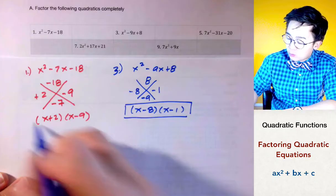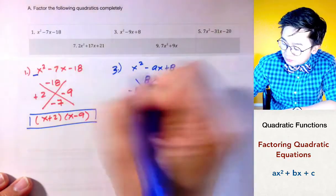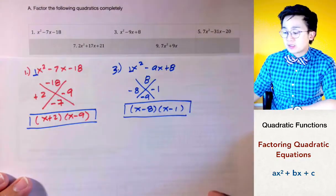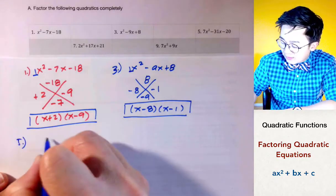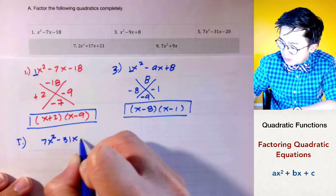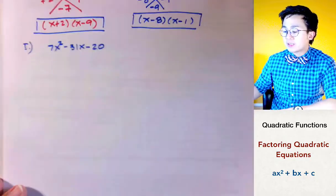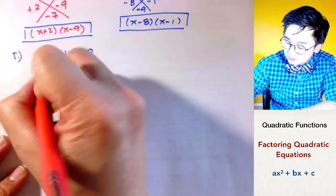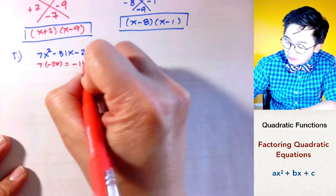This is how we factor quadratic equations when the leading term is equal to 1. For problem number 5 it's going to be a little different because the leading term is now 7, no longer equal to 1. There will be two parts: the first part is to multiply 7 and negative 20, which equals negative 140.